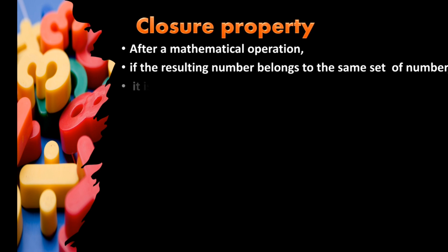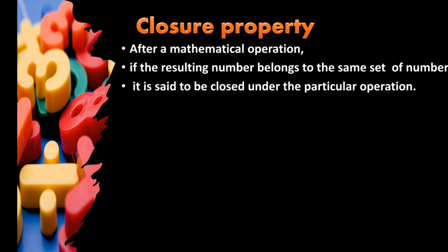Let A and B be two numbers of the same set, whether they are natural numbers, whole numbers, integers, or rational numbers. If the resulting number C, D, E, or F also belongs to the same set as A and B, then that particular number set is said to be closed under that particular operation.